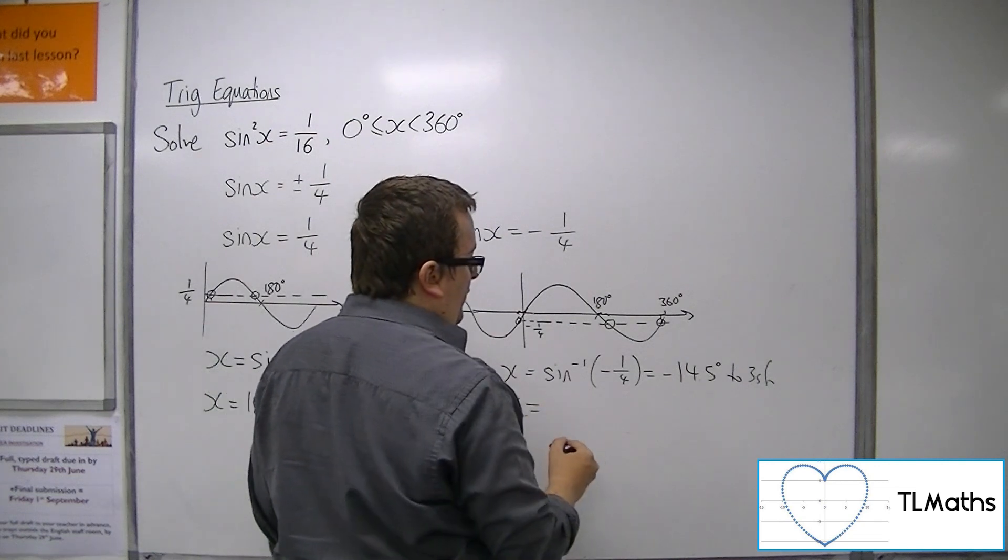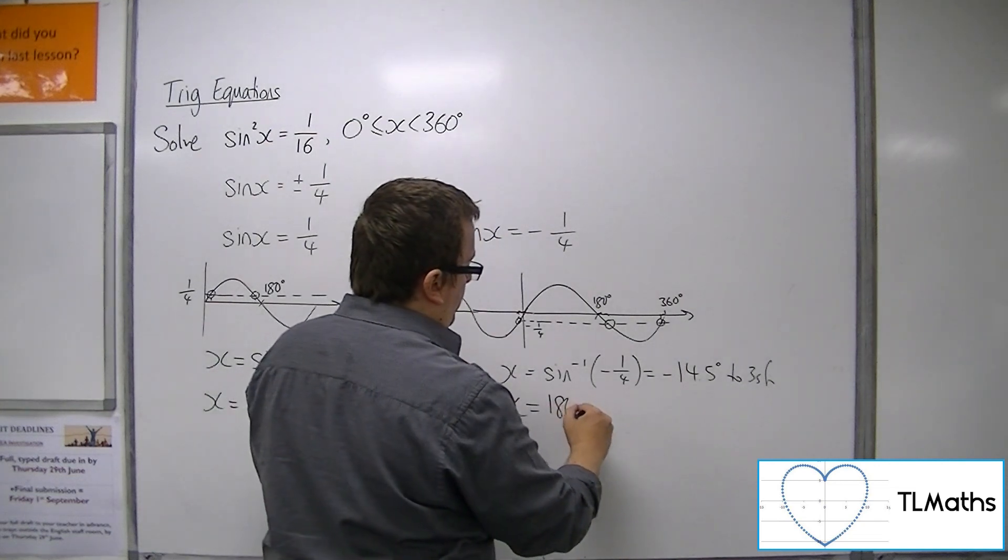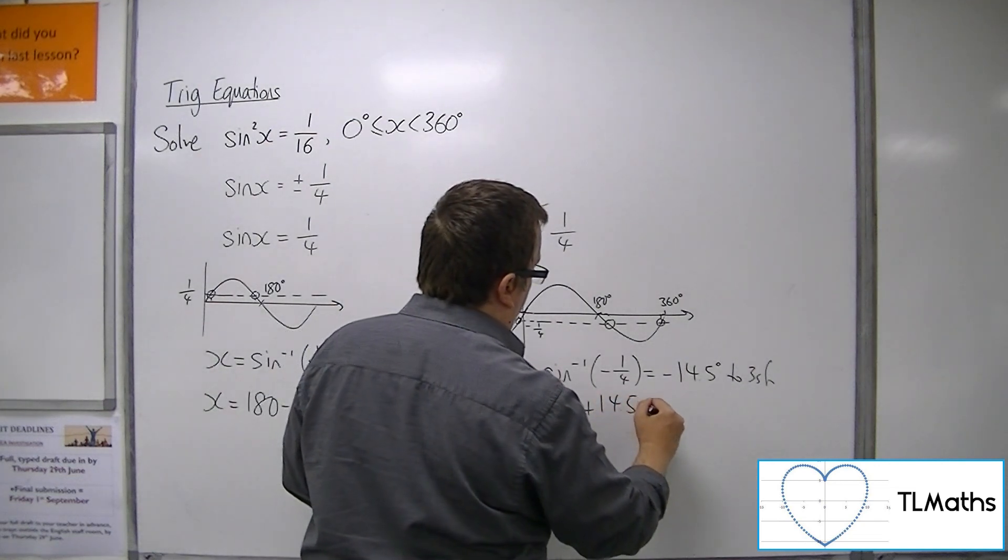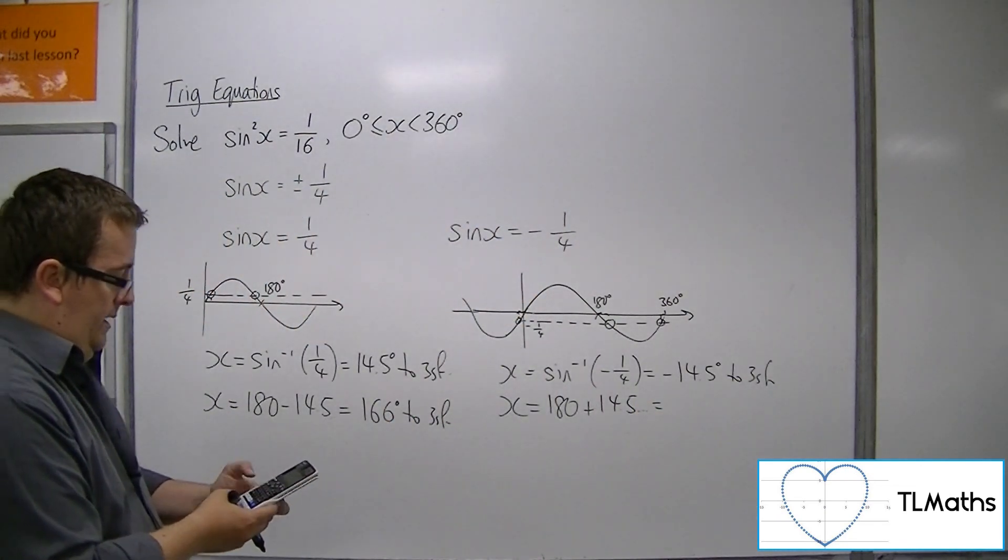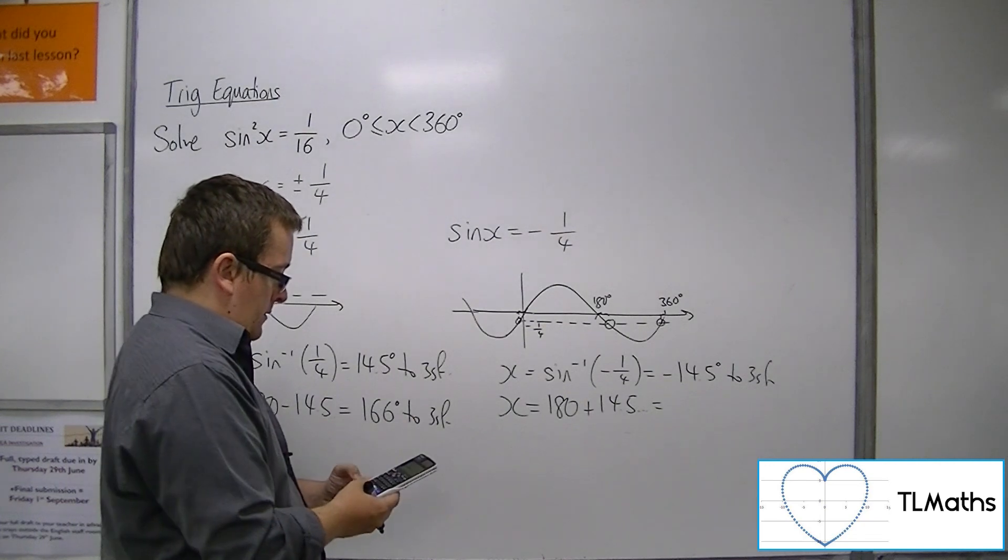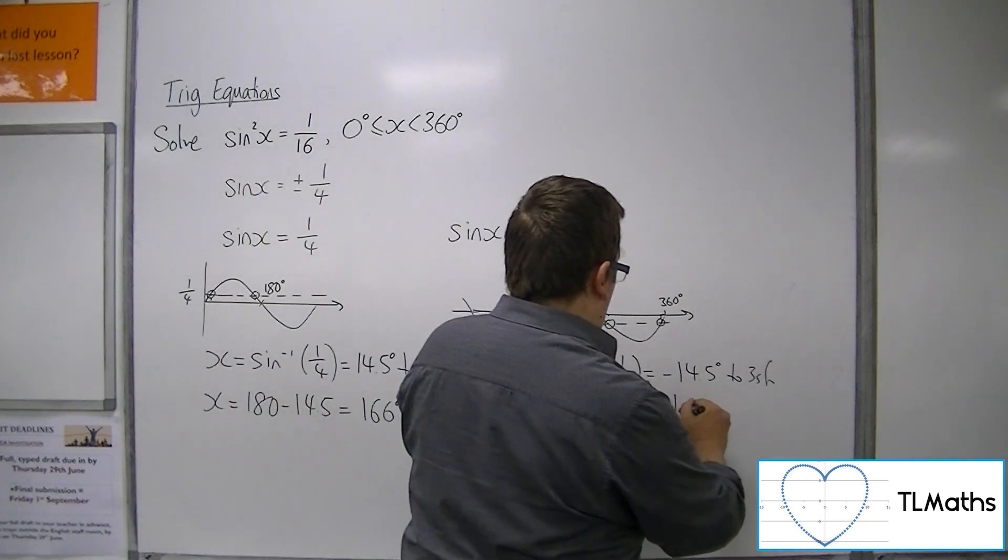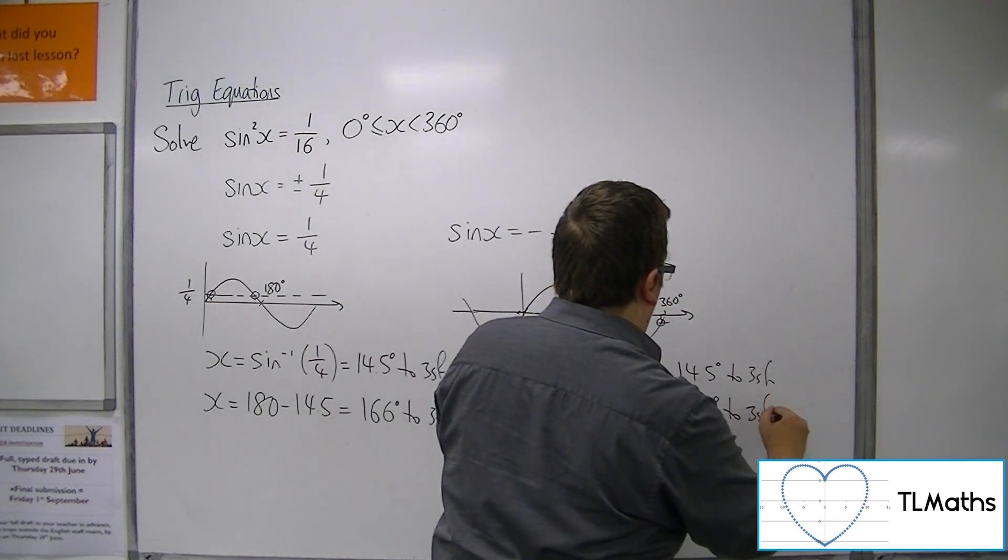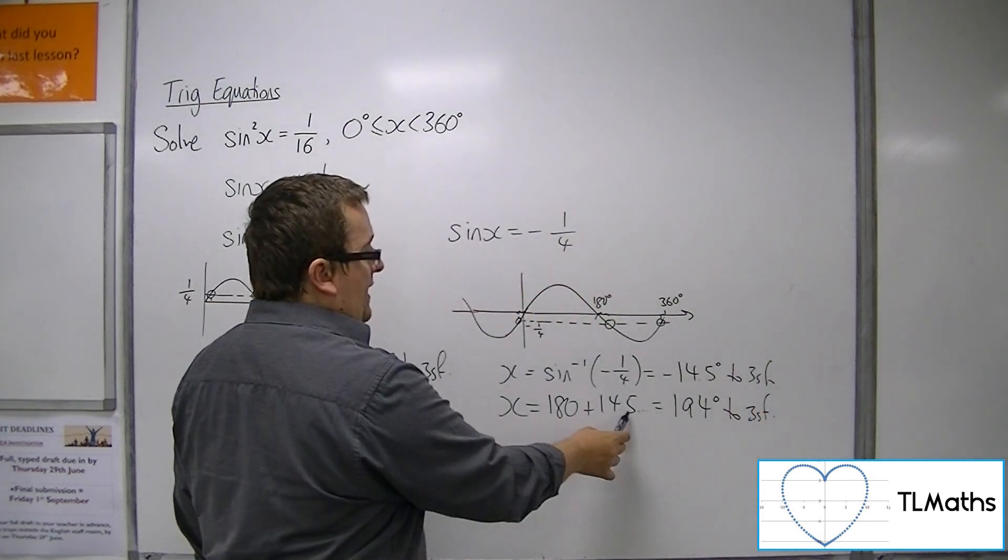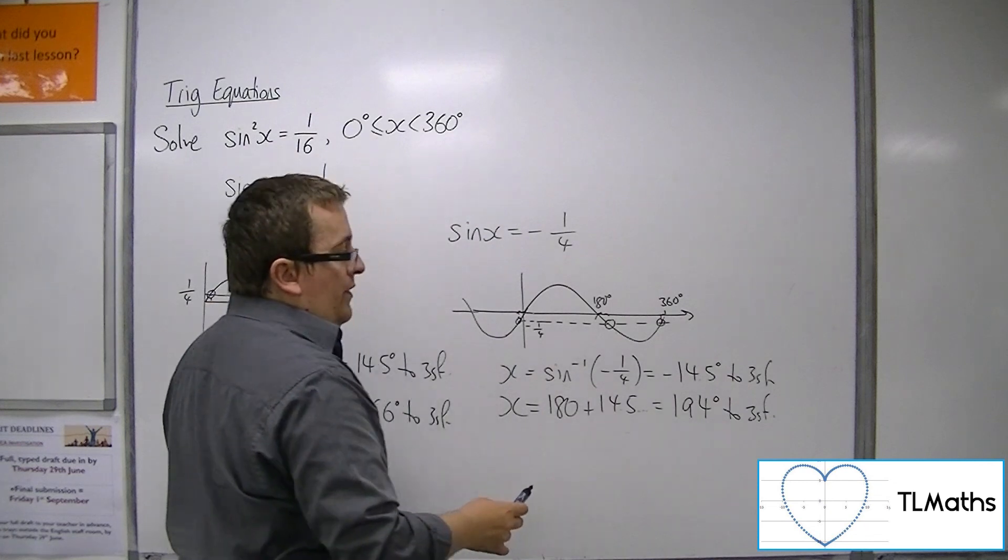So, 180 plus the 14.5, so 180 plus 14.5 is 194 to 3 significant figures. OK, got to be careful here with the rounding.